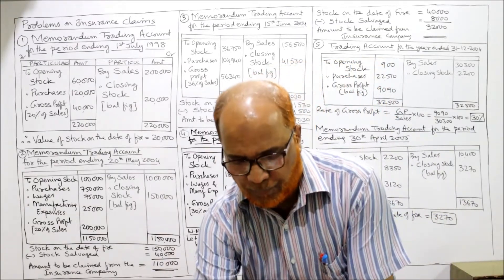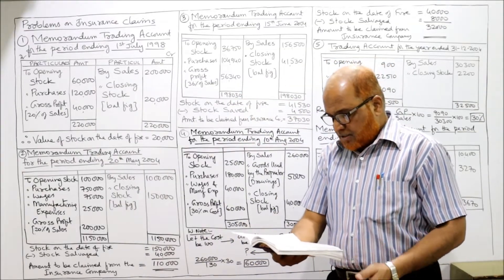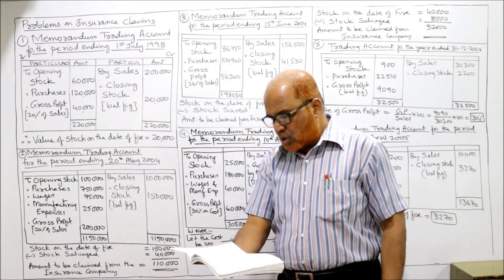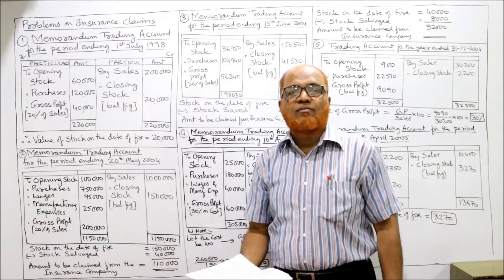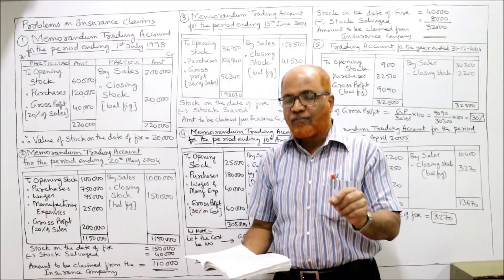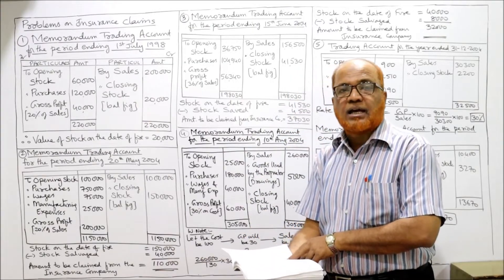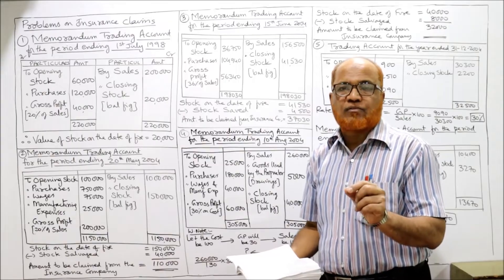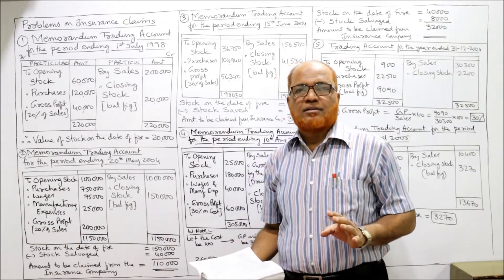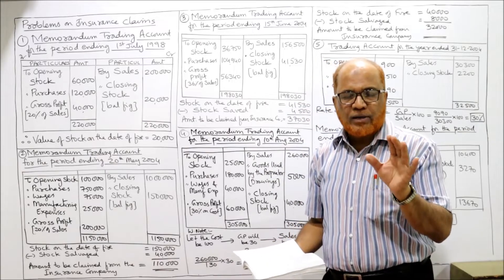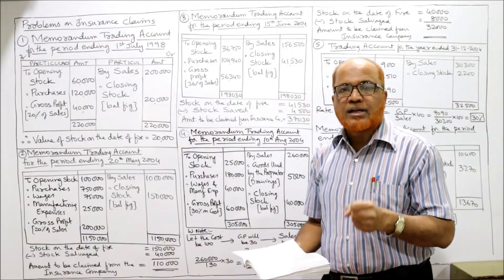Let's start the first problem: find out the value of stock burnt by fire from the following particulars. Fire broke out in the factory on 1st July 1998. Understanding the problem carefully is half the solution, so before going to the solution you must have a good grasp of the contents of the problem.